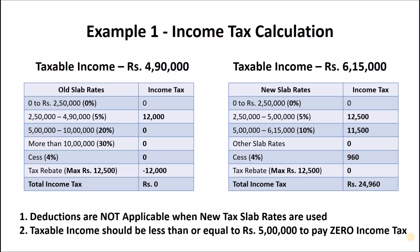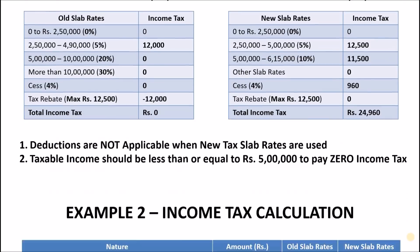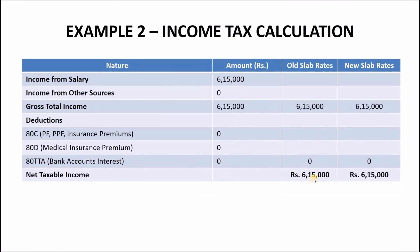Let us now see another example without any deductions. Let's say your income from salary is Rs 6,15,000 and we will not take any investments or deductions into account. In case you are not an employee or a pensioner, you will not get the standard deduction of Rs 50,000. So your net taxable income will be Rs 6,15,000 for both old and new tax slab rates.